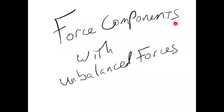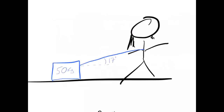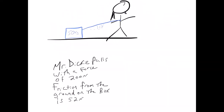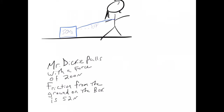Today we're going to talk about force components with unbalanced forces, jumping into combining units three and four. Here's our standard problem: Mr. Dickey pulling a 50 kilogram box along a surface. We need a little more information. Mr. Dickey pulls with a force of 200 newtons and the friction from the ground on the box is 52 newtons. What is the acceleration of the box? That's what we want to know.